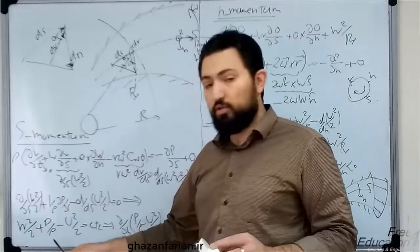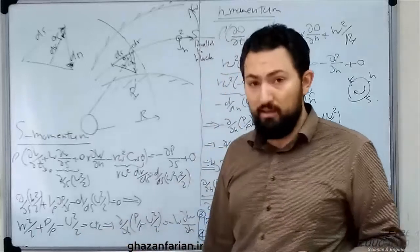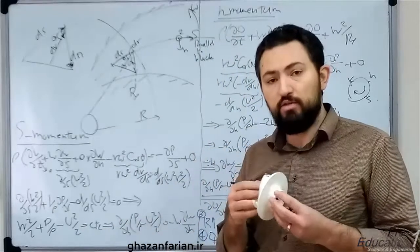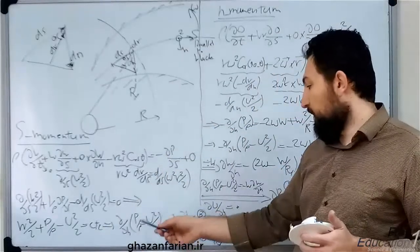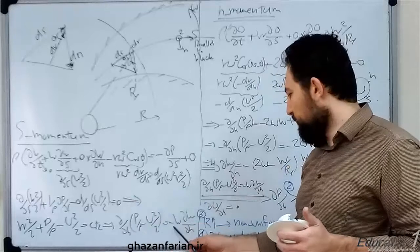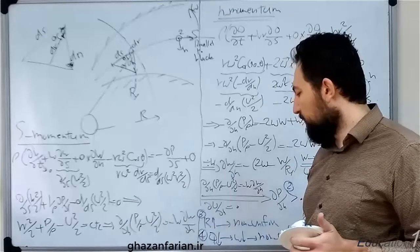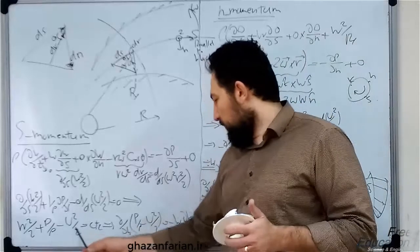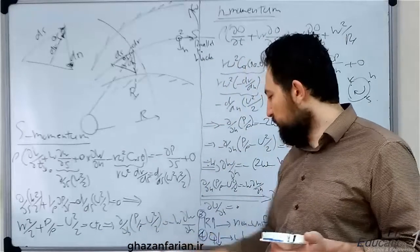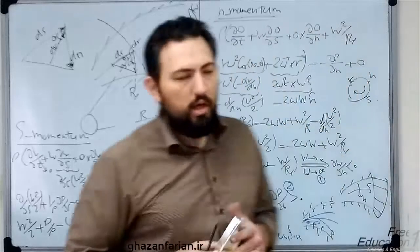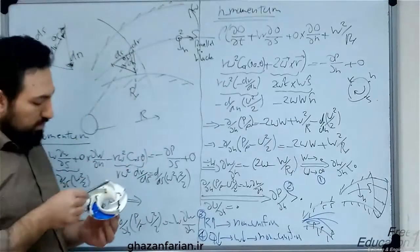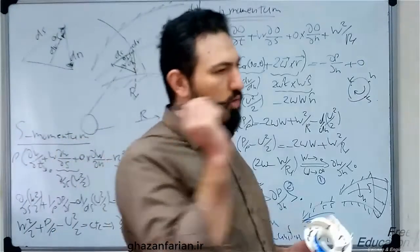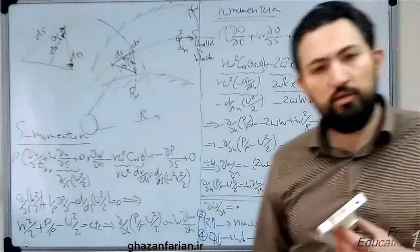Then take the derivative of this equation with respect to n, where n is the normal direction to the streamline. The derivative of the W²/2 term, when moved to the other side of the equation, becomes minus W times the partial derivative of W with respect to n. I need this relation in the n-momentum conservation law.